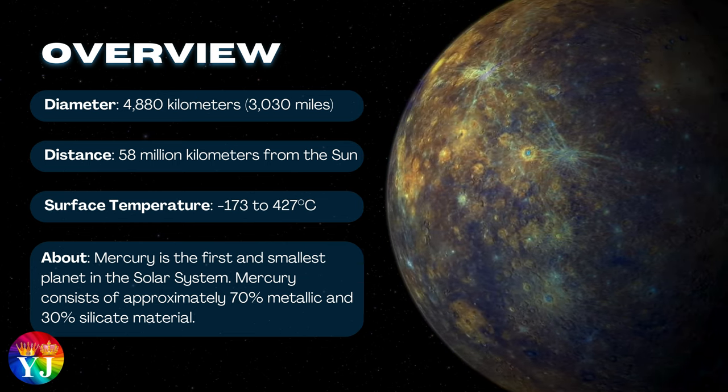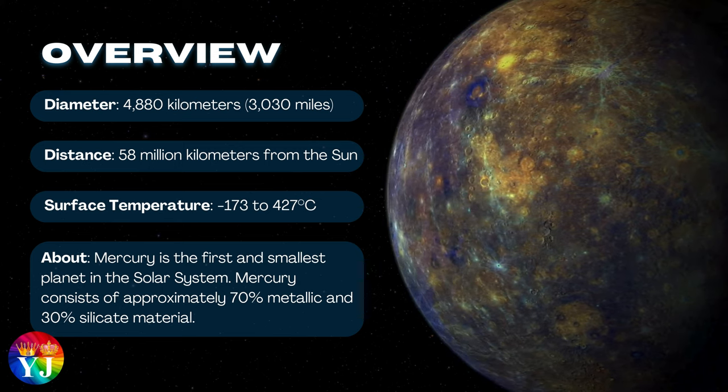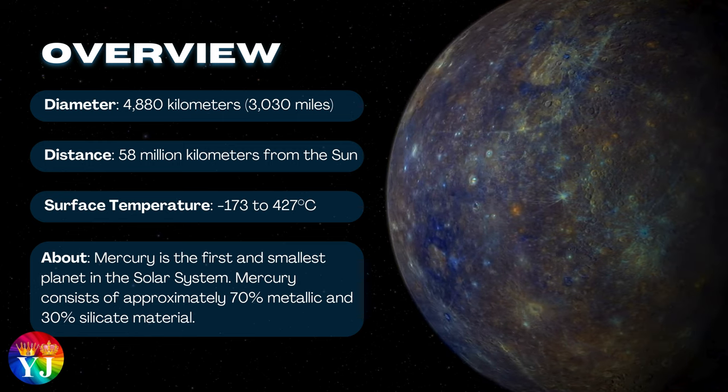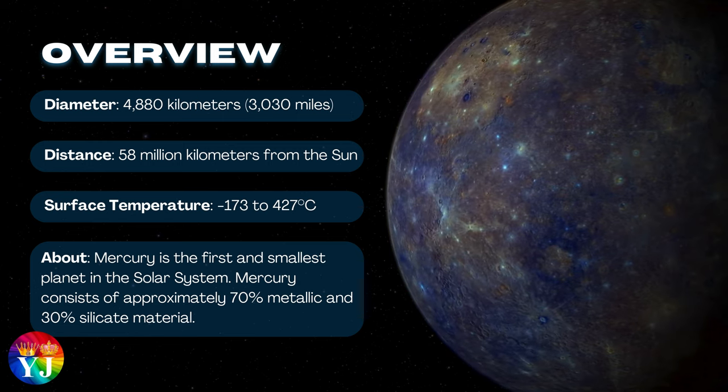About Mercury: Mercury is the first and smallest planet in the Solar System. Mercury consists of approximately 70% metallic and 30% silicate material.